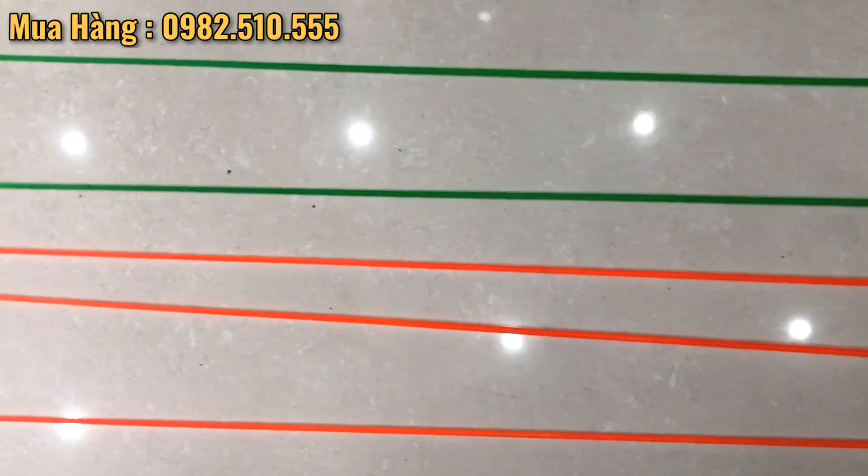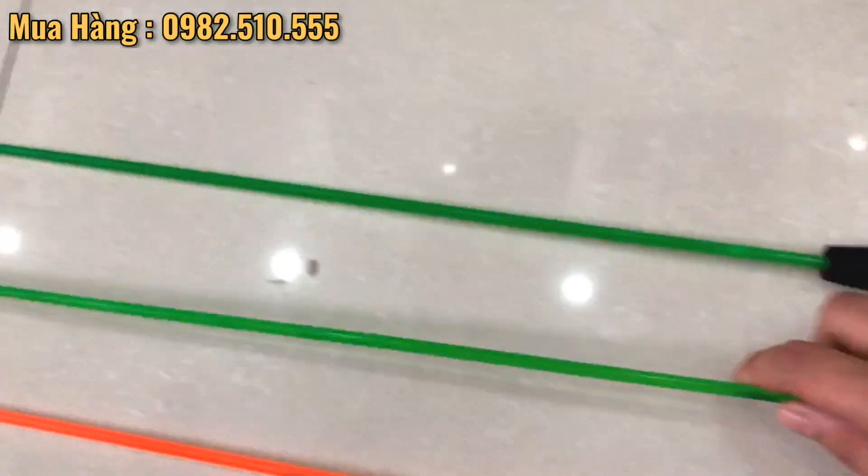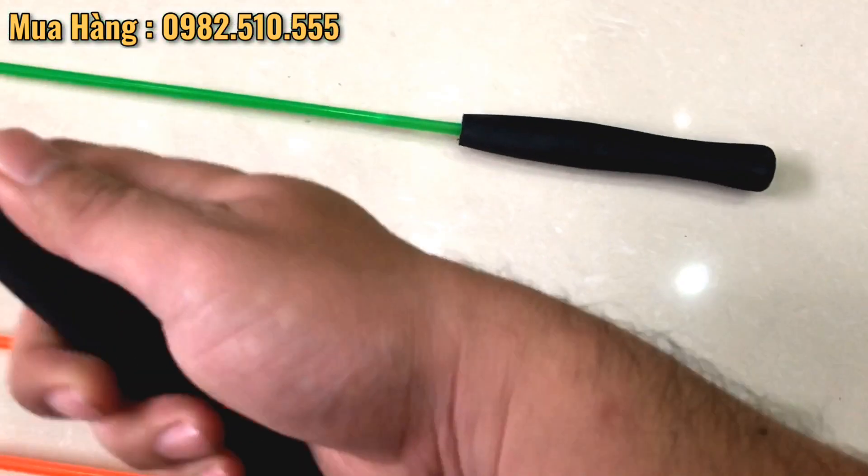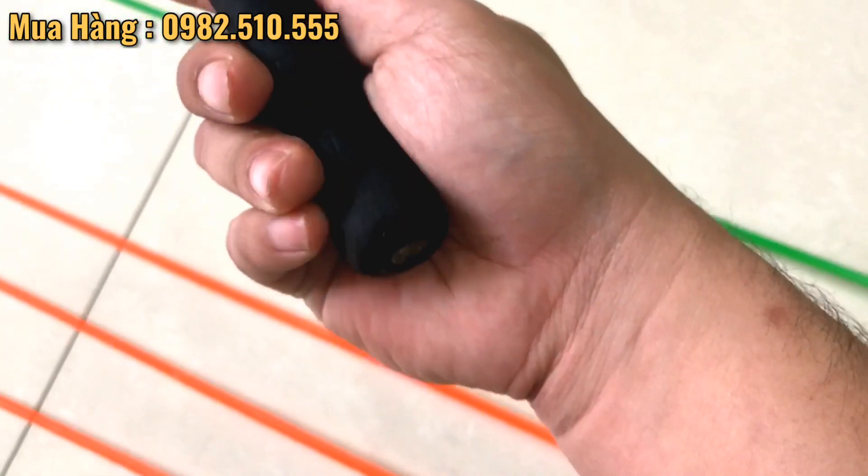Cần này có màu trong suốt và chất liệu của cần các bác cầm rất thoải mái. Tay cầm bằng xốp rất êm. Cần này rất nhẹ nên các bác câu tôm rất thoải mái luôn.